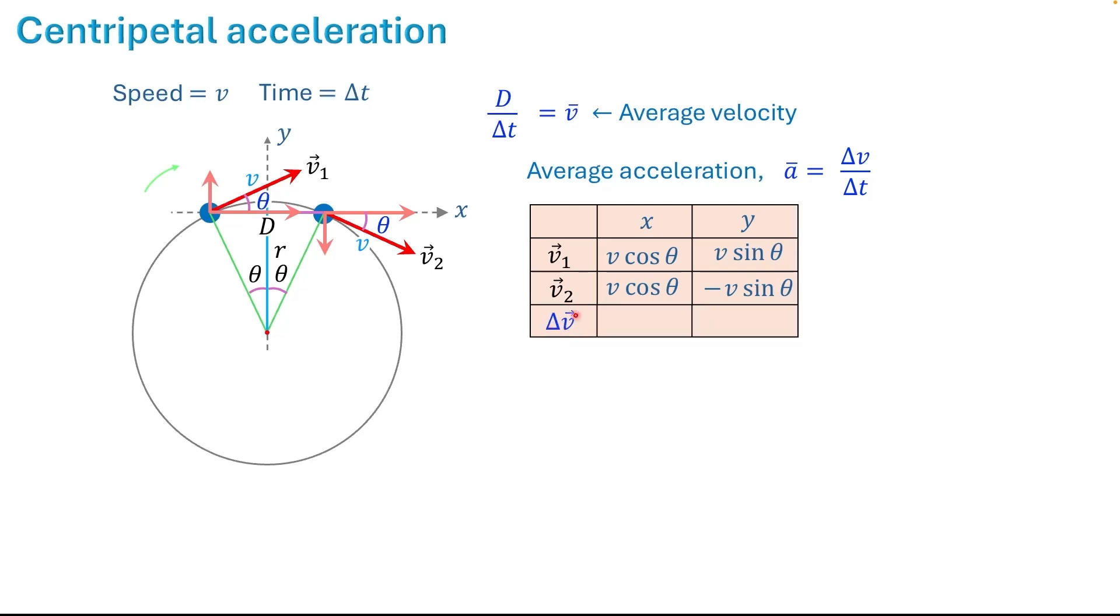Next, we will find the change in velocity. The x component of the change in velocity is zero. The y component is negative v sine theta minus v sine theta, which equals negative 2v sine theta. Now we can find the magnitude of change in velocity using the formula: square root of delta vx squared plus delta vy squared, which equals 2v sine theta. So delta v is 2v sine theta.